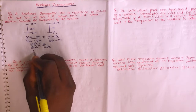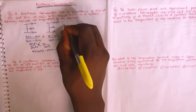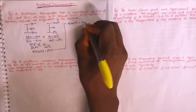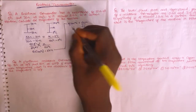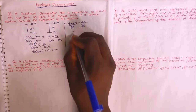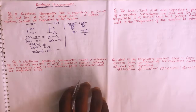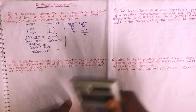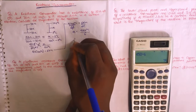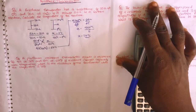Cross-multiplying: 45 × 100°C = 60x, which gives 4500°C = 60x. Dividing both sides by 60: x = 4500 / 60 = 75°C. So the temperature of the medium is 75°C. That's the answer to the first question.